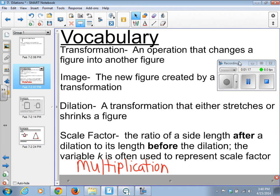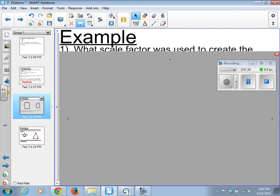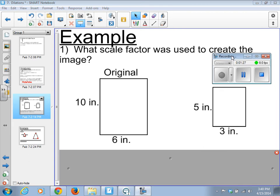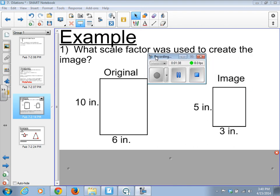So let's try this out. We've got the original, the 10 by 6 rectangle. And we have the image of 5 by 3 rectangle. Pretty easy to see what was done to get from the original to the image.